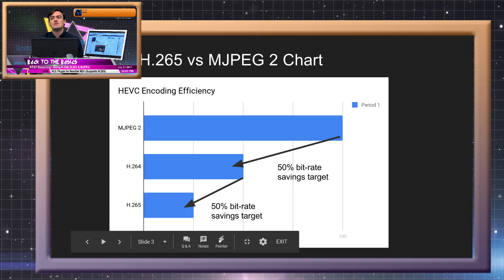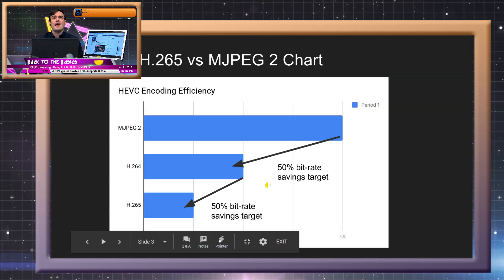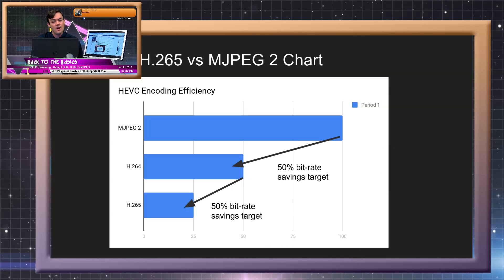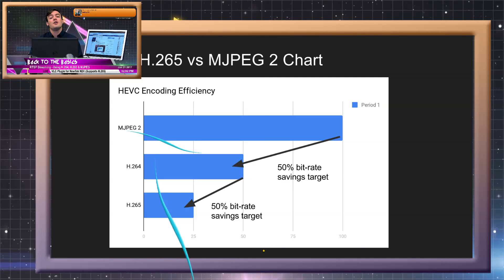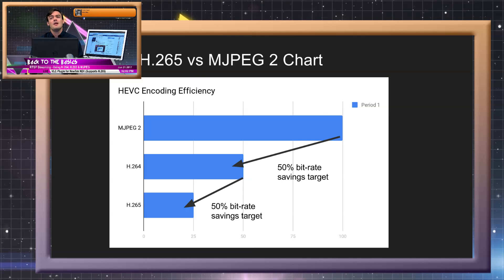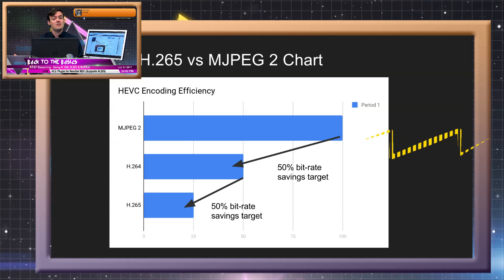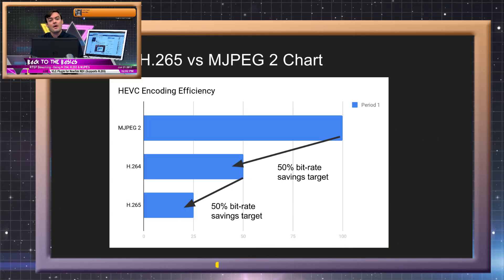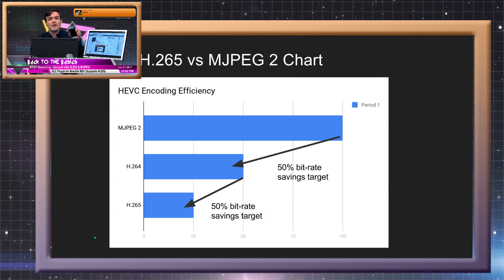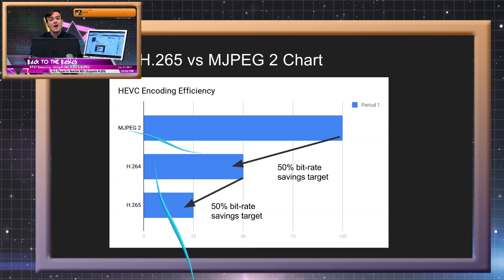Let's talk about MJPEG, which is completely uncompressed video. It sends every single frame over the network with no compression whatsoever. This is ideal for dedicated networks where you have no other bandwidth to worry about — no congestion, maybe no one else is on your video network. On our network here at the office, MJPEG can sometimes stutter a little bit because there's so much streaming going on — 50 different computers, hundreds of devices.